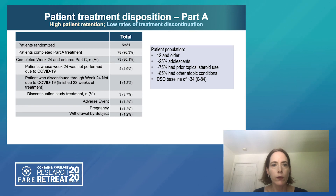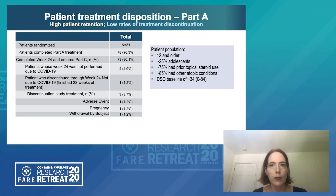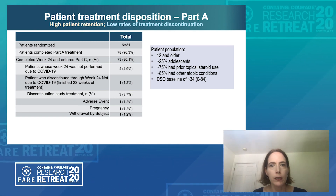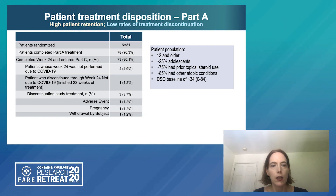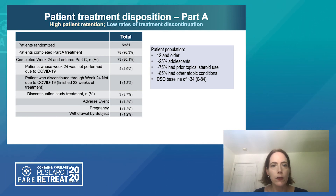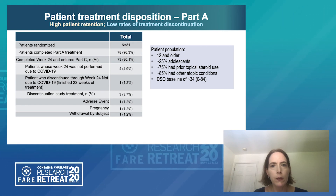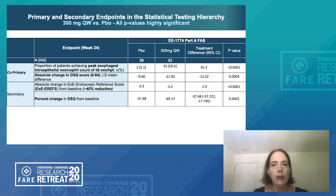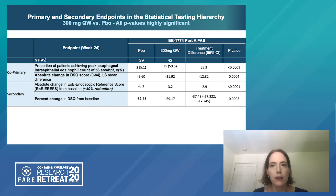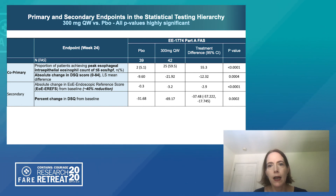For Part A of this study, 81 patients were randomized, including both adolescents and adults — patients 12 years and older — with approximately 25% adolescent patients enrolled. About three-quarters had a history of topical steroid use, and approximately 85% had at least one other atopic comorbidity. The DSQ baseline score was approximately 34 out of 84, indicating a significant degree of symptoms. The initial data showed highly significant results for both histology and symptoms, with a 40% reduction in EREFS scores for dupilumab-treated patients after 24 weeks.